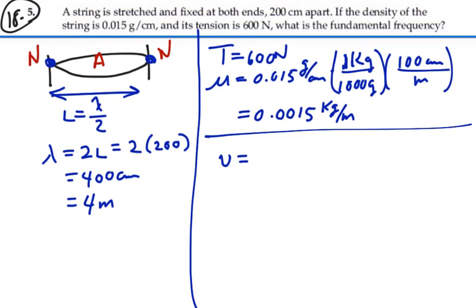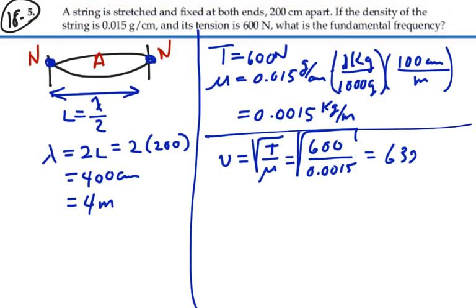Velocity of propagation, square root of the tension over the mass per length, this would be 600 divided by 0.0015 square root. And what is that? 632.5 meters per second. Velocity of waves on the string.